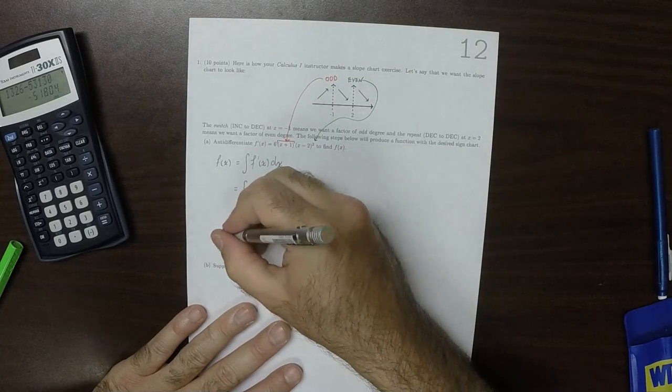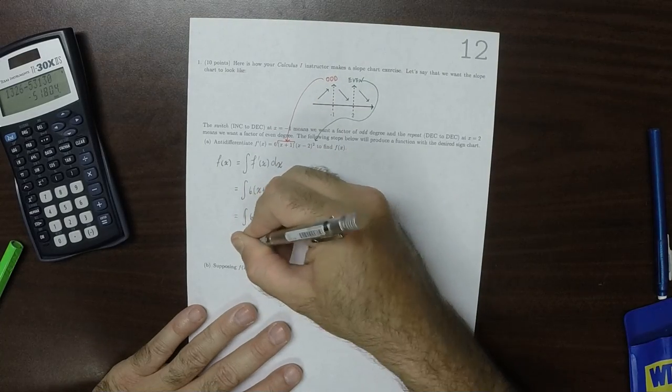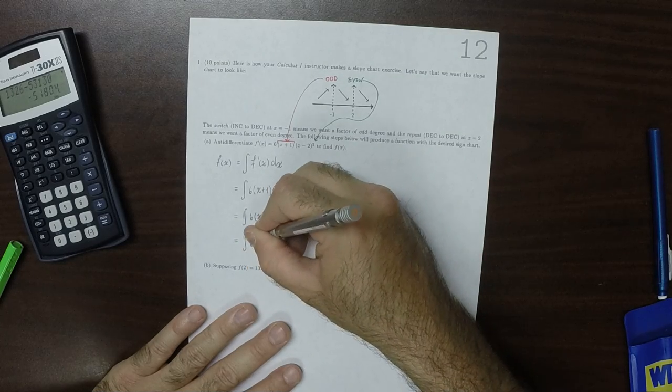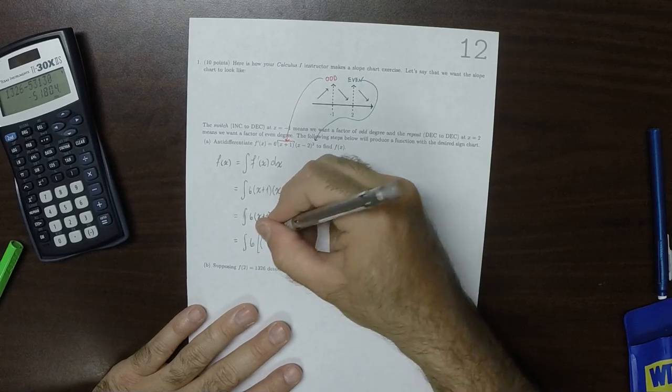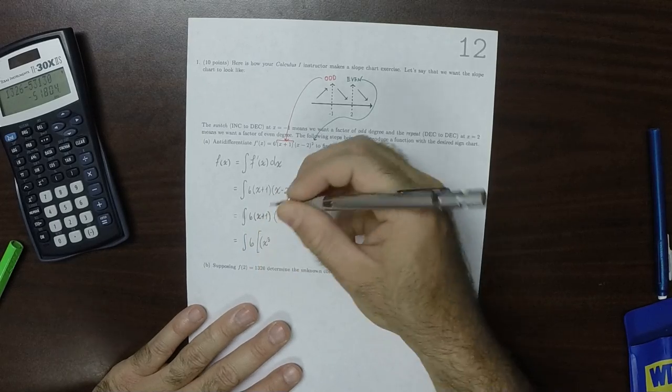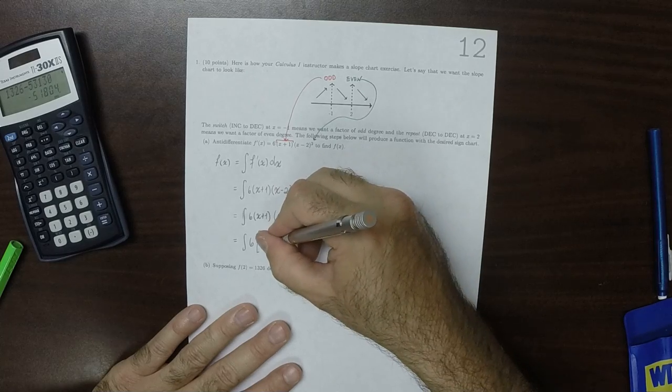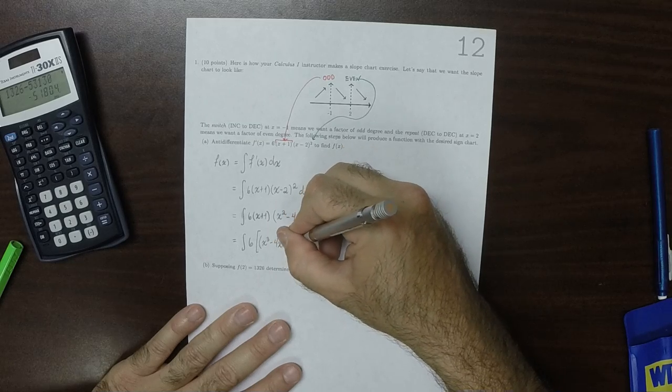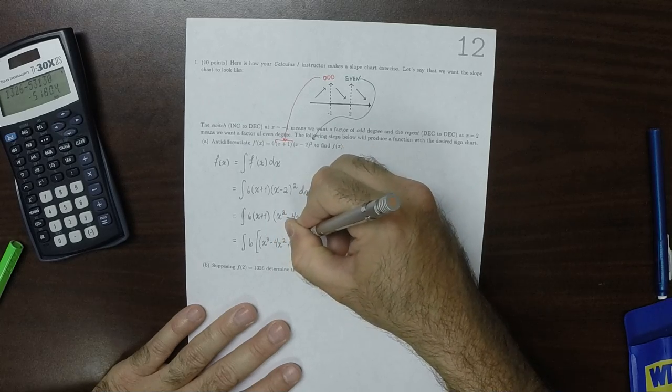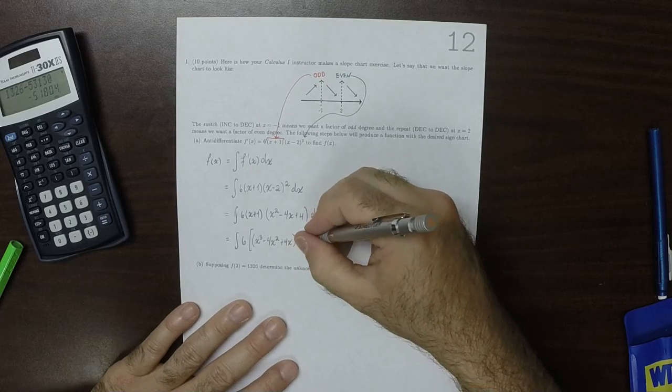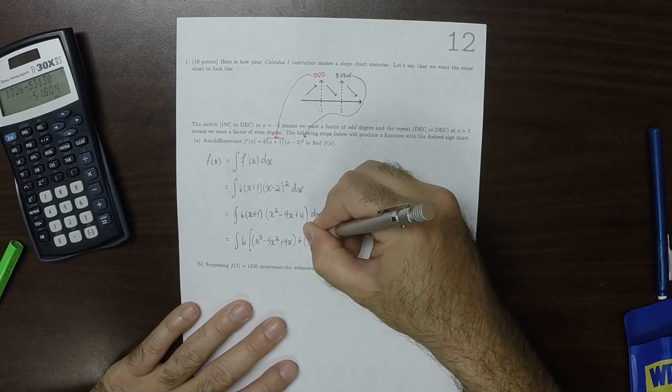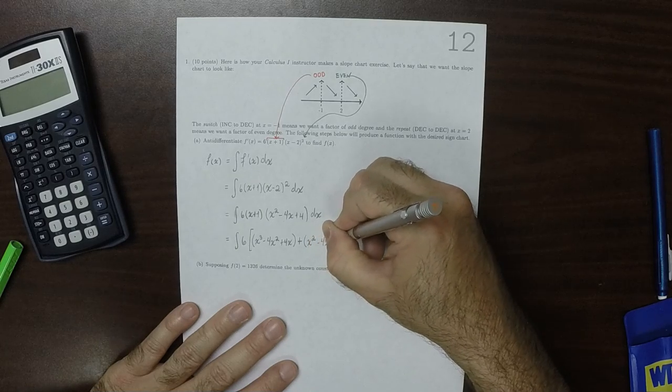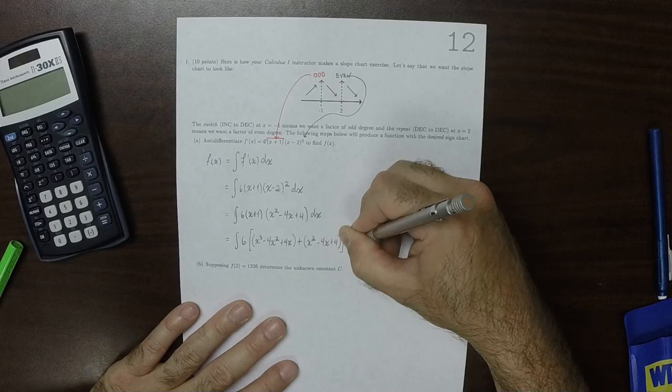and then multiplied by x squared minus 4x plus 4 dx. And now I'll combine the x plus 1 and the x in the quadratic term. So that would be anti-derivative of 6, and then that would be x cubed minus 4x squared,